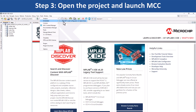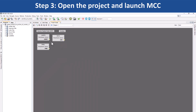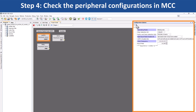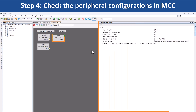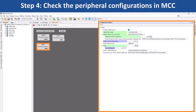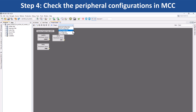Go to Tools, Embedded and open MCC, which will open the project graph. Here you can see the various peripherals configured for the PIC32MZEF MCU. UART6 is configured as USART to print LED toggling rate and temperature values. I2C1 is configured as I2C master to read temperature values from the IO1 Xplained Pro Extension Kit. The timer is configured to generate a 500ms timeout interrupt. You can configure other system-specific peripherals using the drop-down menu.